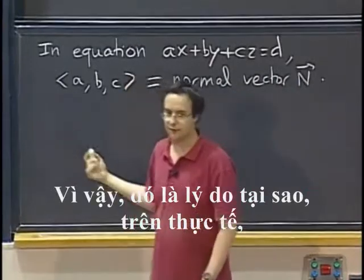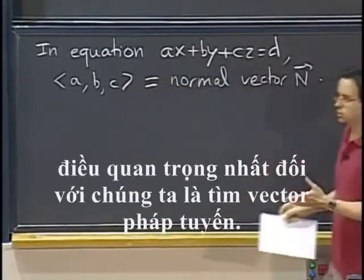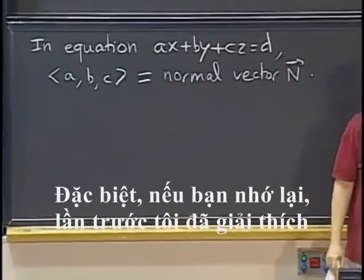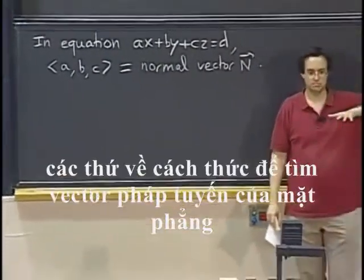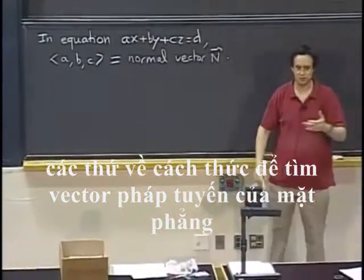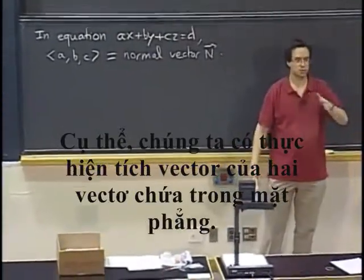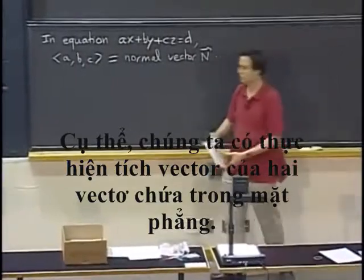So, that's why, in fact, what matters to us mostly is finding the normal vector. And, in particular, if you remember last time, I explained something about how we can find normal vector to the plane if we know points in the plane. Namely, we can take the cross product of two vectors contained in the plane.